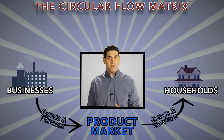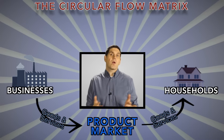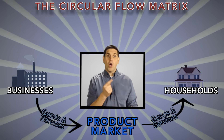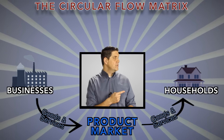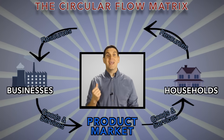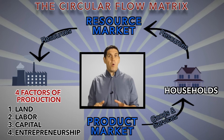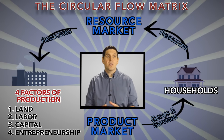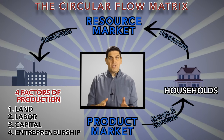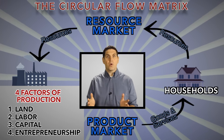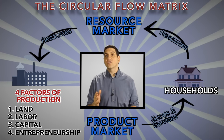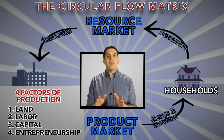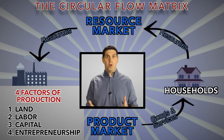But to make those goods and services, businesses need resources, like workers and machines. In the free market, households own the resources, and they're sold to the businesses in the resource market. Economists point out that there's four categories of resources, or four factors of production. The first one is land, which is any natural resource or anything that comes from nature. Then there's labor, then capital, which is tools and machines. And finally, someone to bring it all together — the entrepreneur.